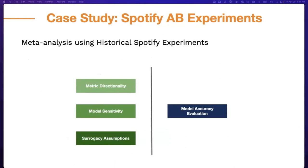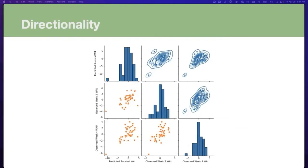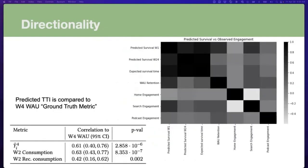We look at the predicted time-to-event metric against observed week 2 and week 4 weekly active usage. The plot shows generally high alignment between the predicted and observed metrics, with very high correlation between our predicted time-to-event and the observed week 2 as well as week 4 weekly active retention. We also compared the predicted metric against other engagement signals and computed confidence intervals, observing high correlation. Notably, the directional alignment is comparable to week 2 consumption.